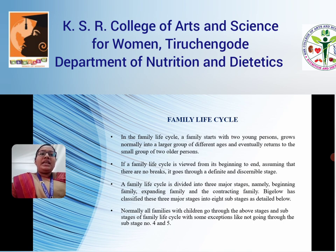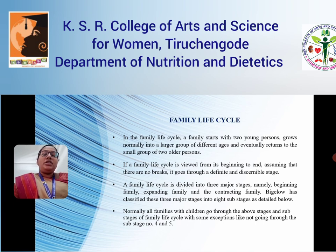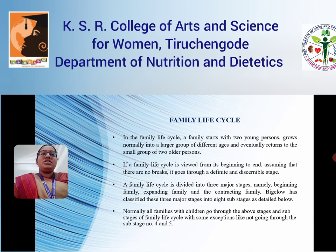A family cycle is divided into three major stages, namely beginning family, expanding family, and contracting family. Normally, all families with children go through the above stages and sub-stages of the family cycle, with some exceptions like not going through sub-stages four and five.